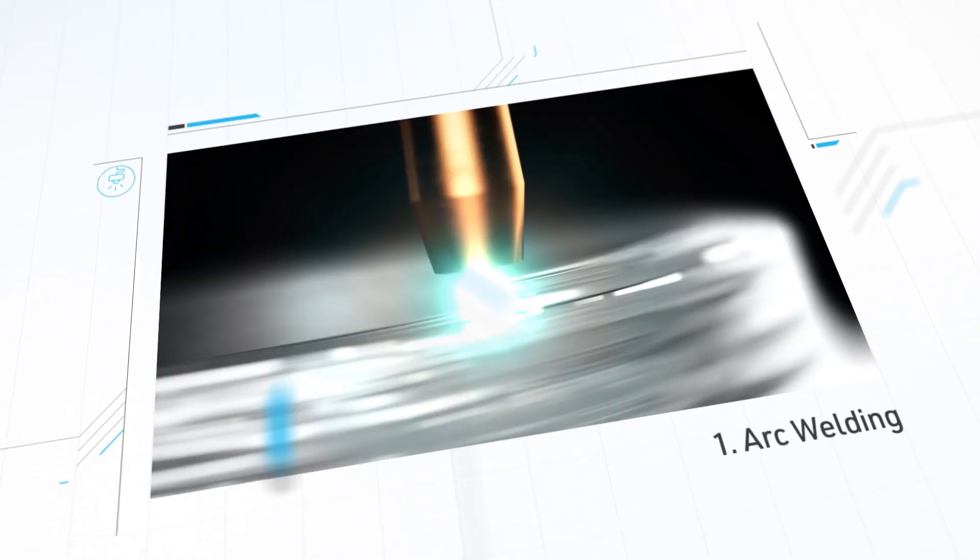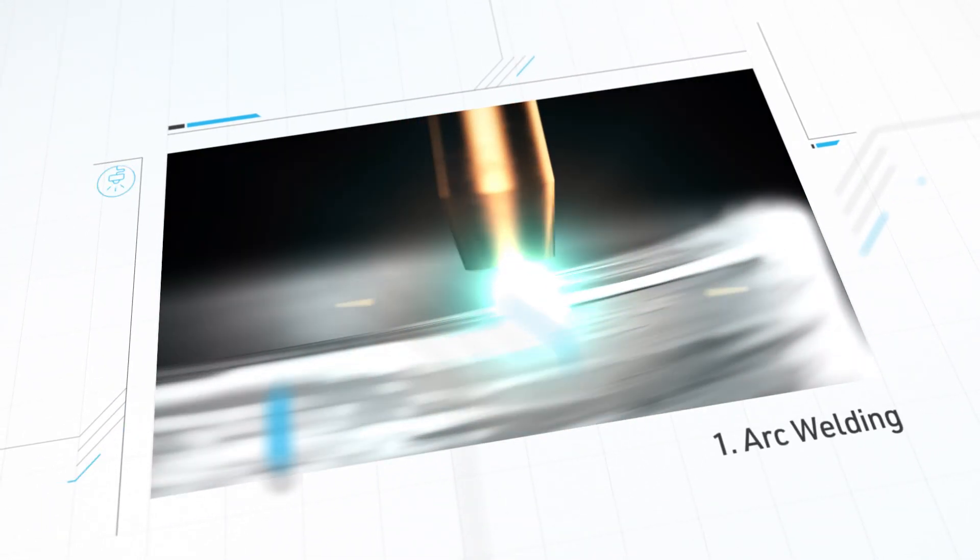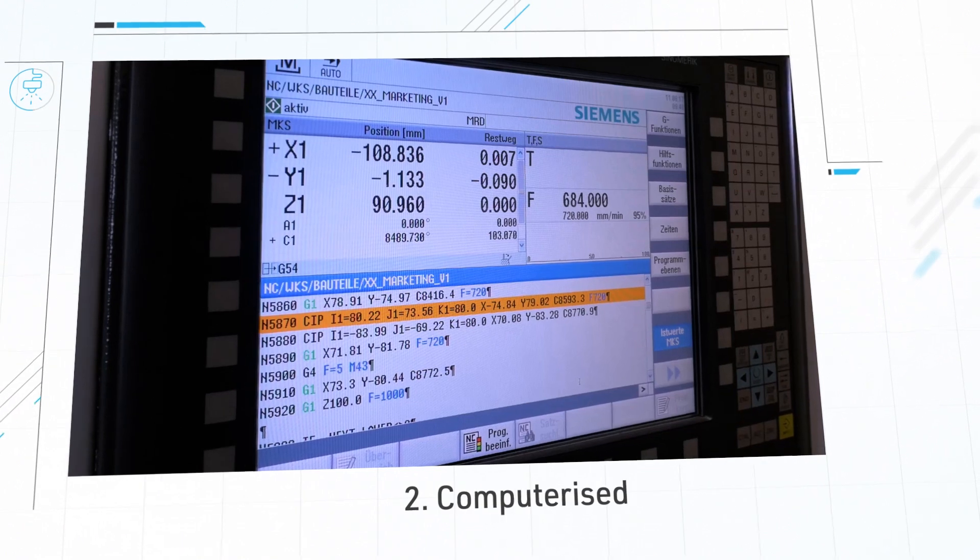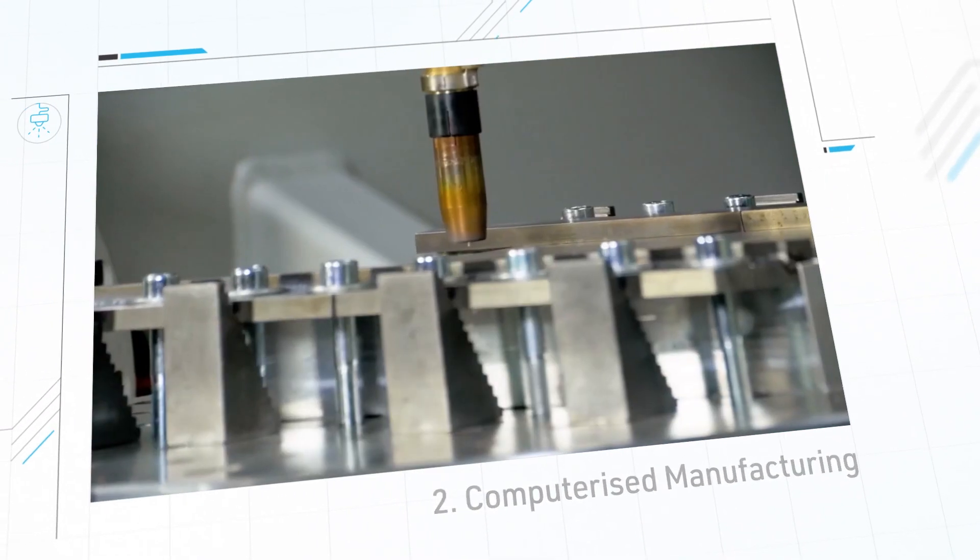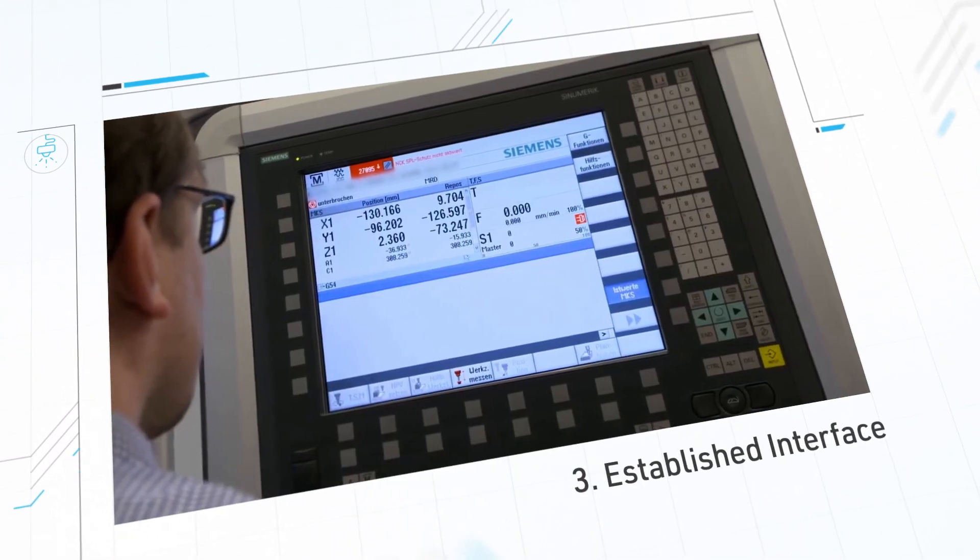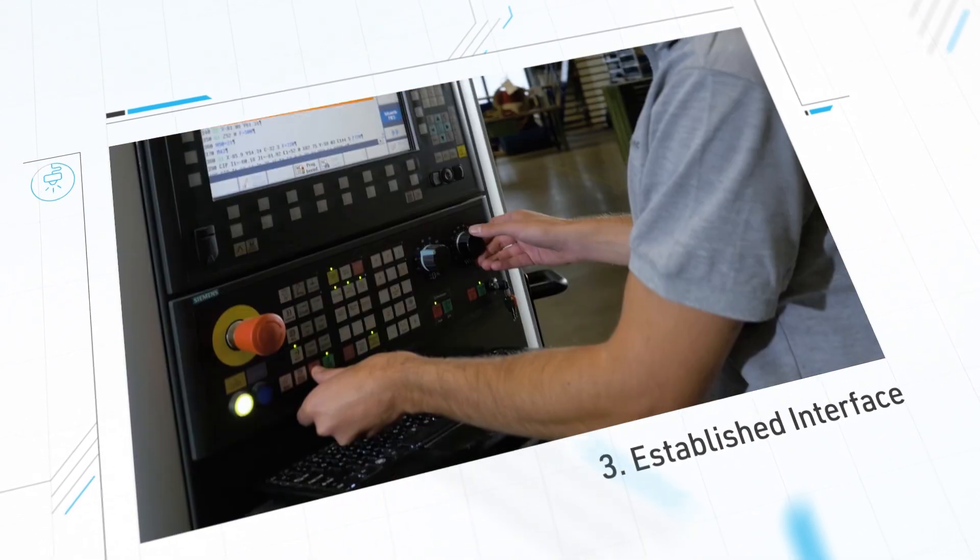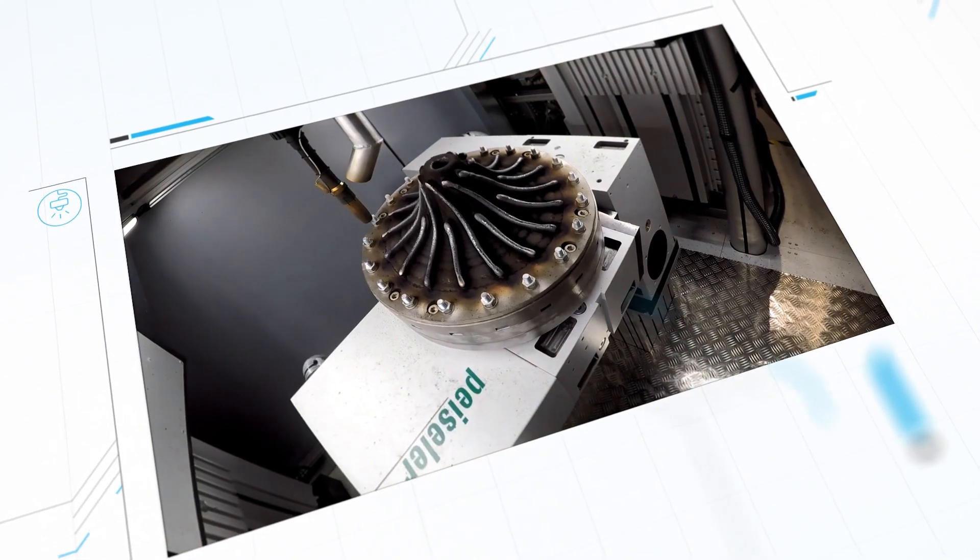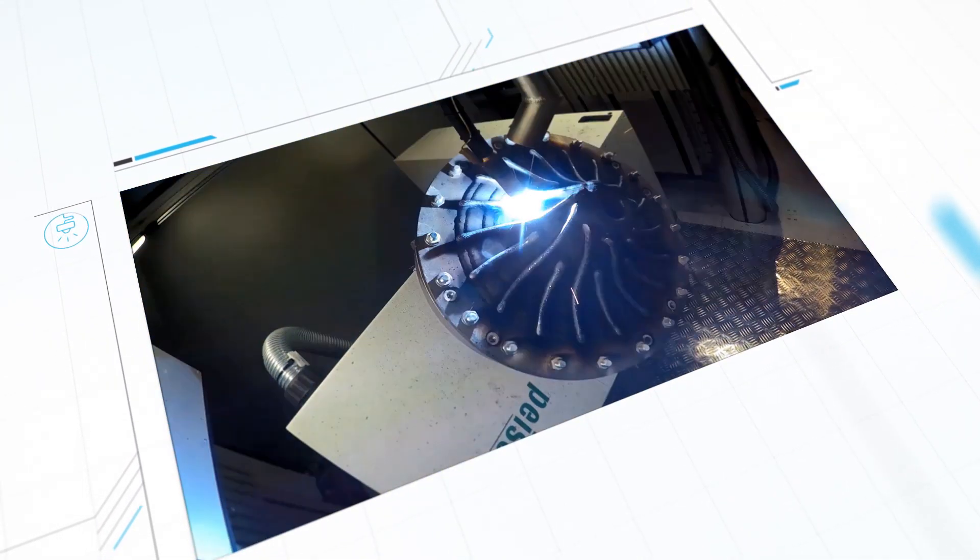First, arc welding process. Second, computerized manufacturing. And third, an established interface for a smooth integration into the work process. Together, these revolutionized 3D metal printing.